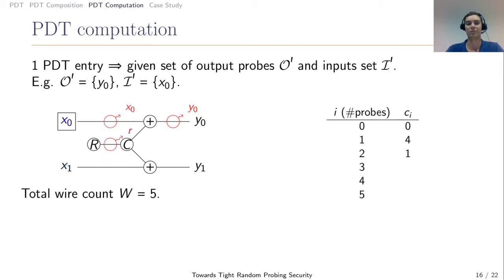We can now move to sets of size two. The first set here requires X0 to be simulated but not X1. The second one here requires both X0 and X1 to be simulated. So we don't increment the CI. And so on and so on. We iterate over all possible set of probes and we get this column of CIs. Once we have the CIs, we can associate to each size of set of probes a probability to be leaked, which is P to the I times 1 minus P to the W minus I. W is the number of wires excluding the output wires in the circuit.